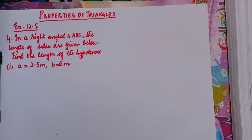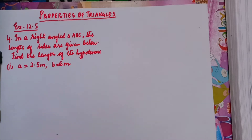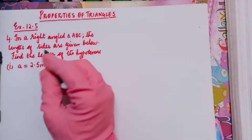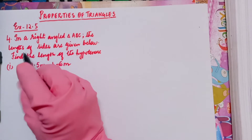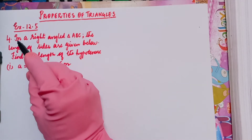Hello everybody. In this video I'm going to explain some problems based on the Pythagoras property, which is in the chapter Properties of Triangles. This is Exercise 12.5 and we're looking at the fourth problem.